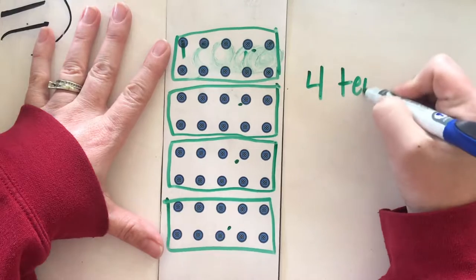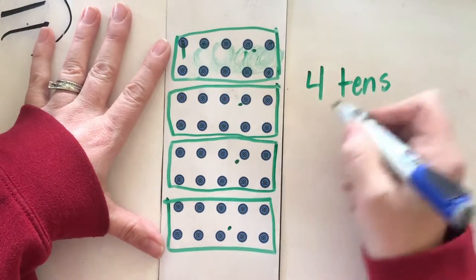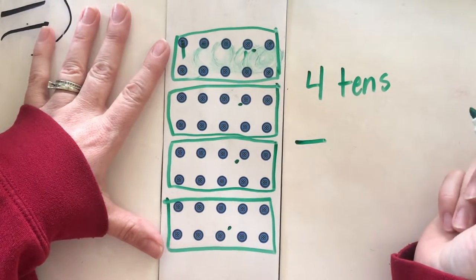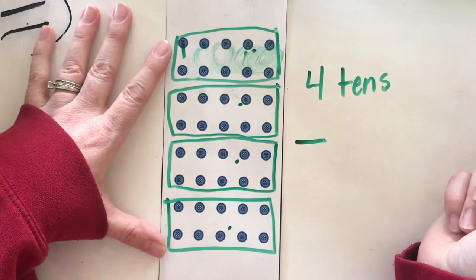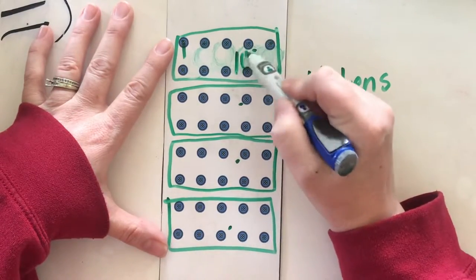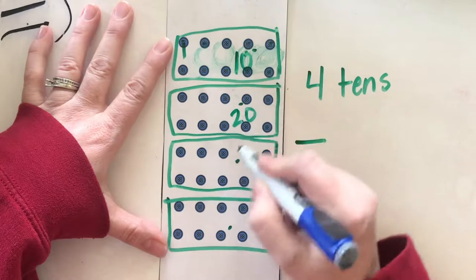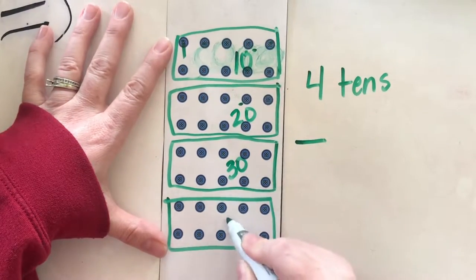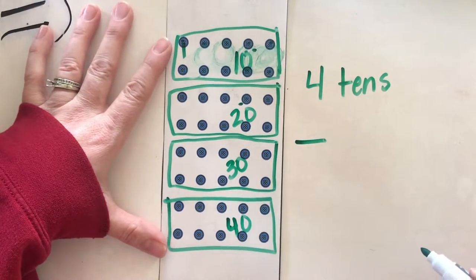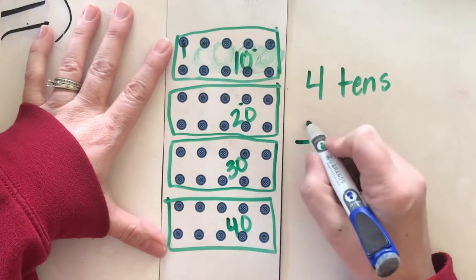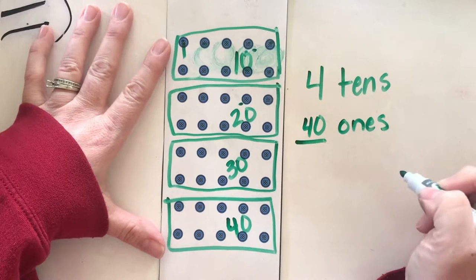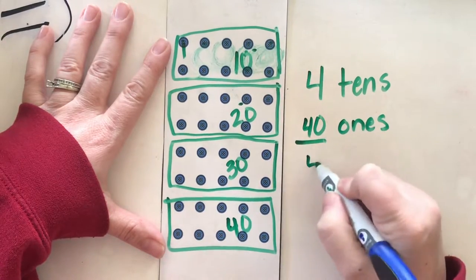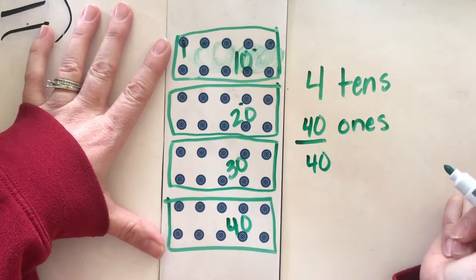I could write on her paper or I could just write four tens. But what is the total value of all those tens? I don't want to count all those ones, but I know I can count by tens — ten, twenty, thirty, forty. So four tens has the same value as forty ones, or just forty.